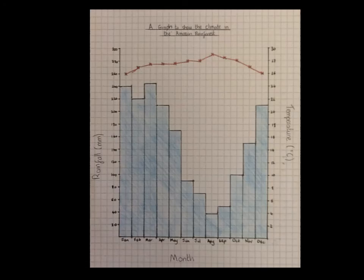This then leaves us only one last thing to do, and that's to add a title for our climate graph. As this graph is showing us the climate within the Amazon rainforest, I've gone with the title, a graph to show climate in the Amazon rainforest.